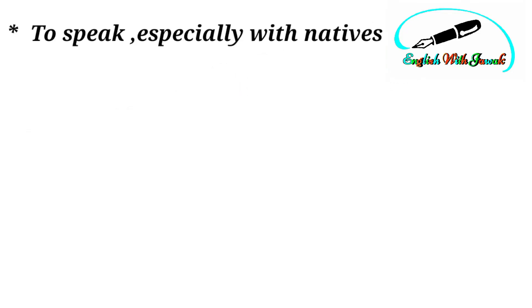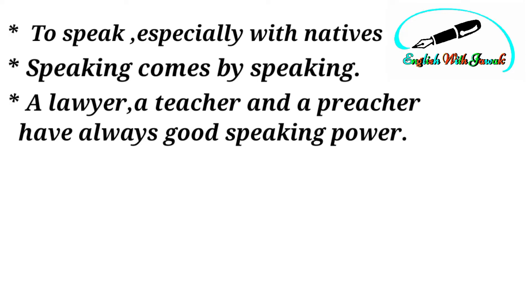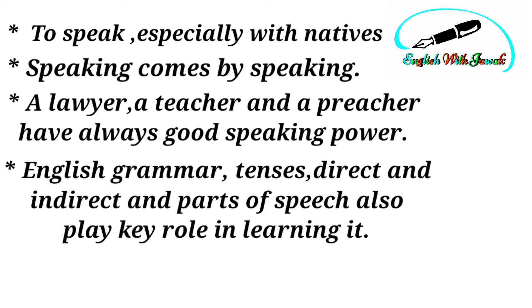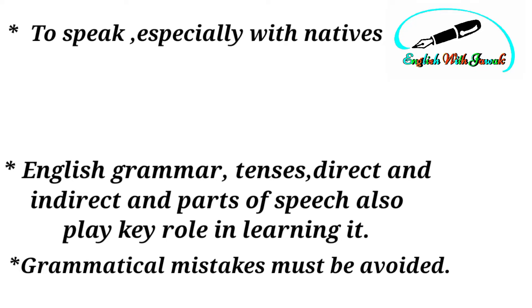The second method is speaking. The second method of learning English is to speak, especially with natives. It is well said that speaking comes by speaking. The more you speak, the more your dream of speaking English like natives will come true. English grammar rules — tenses, parts of speech, direct and indirect speech, and sentence structures — also play a key role in speaking grammatically correct. If you speak fluent English with grammatical mistakes, that will create a very bad impression.